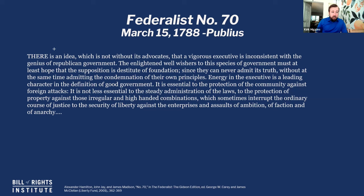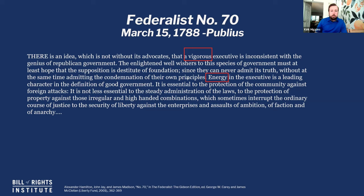Publius starts out this paper by diving right in. He says there is an idea, not without its advocates, that a vigorous executive is inconsistent with the genius of Republican government. He then argues that the enlightened well-wishers to this species of government must at least hope that supposition is destitute of foundation, since they can never admit its truth without at the same time admitting the condemnation of their own principles. Energy in the executive, he says, is the leading character in the definition of good government. It is essential to the protection of the community against foreign attacks, to the steady administration of the laws, to the protection of property, and to the security of liberty against the enterprises and assaults of ambition, faction, and anarchy.